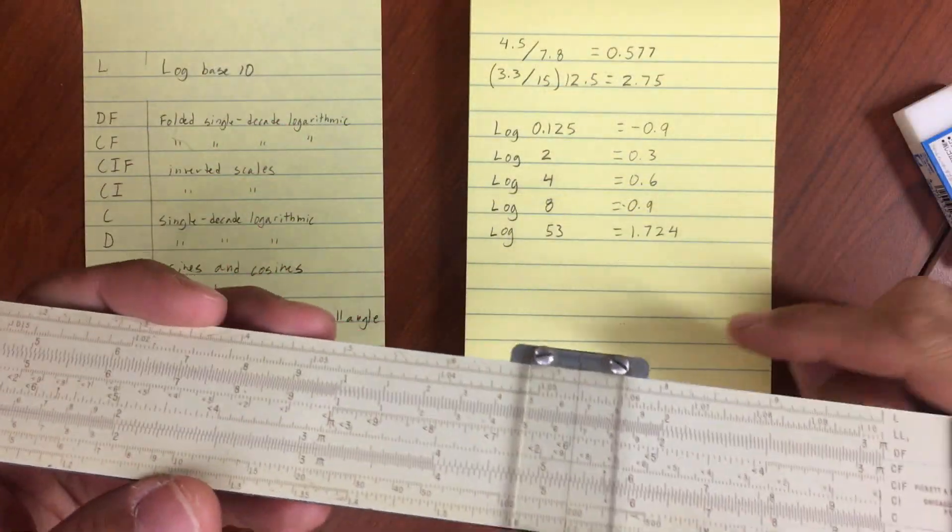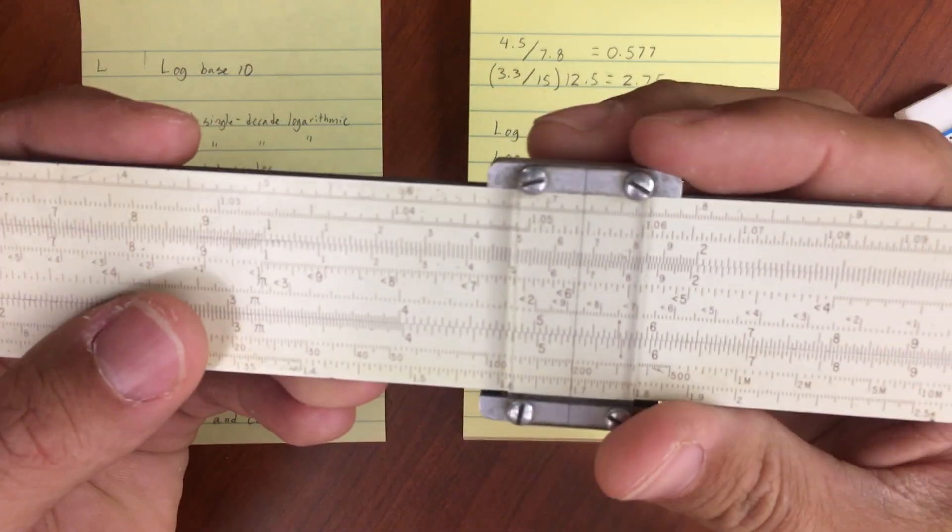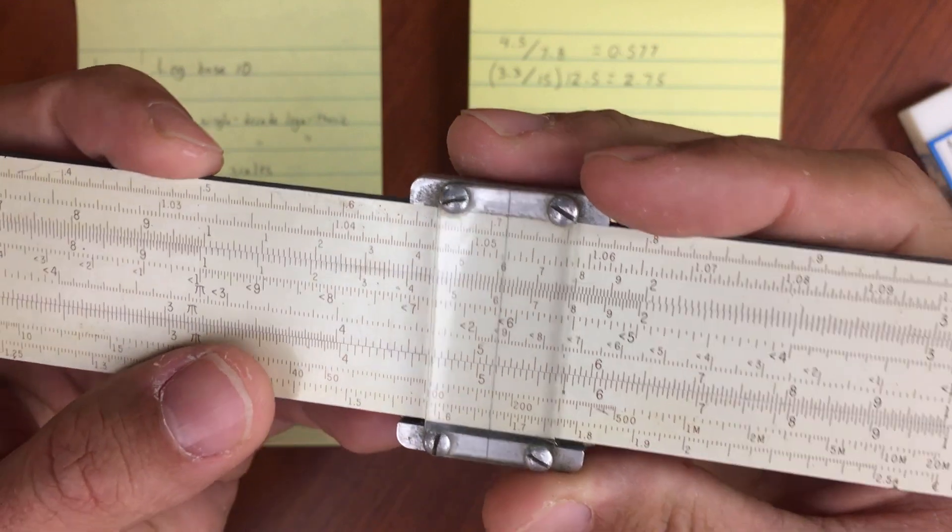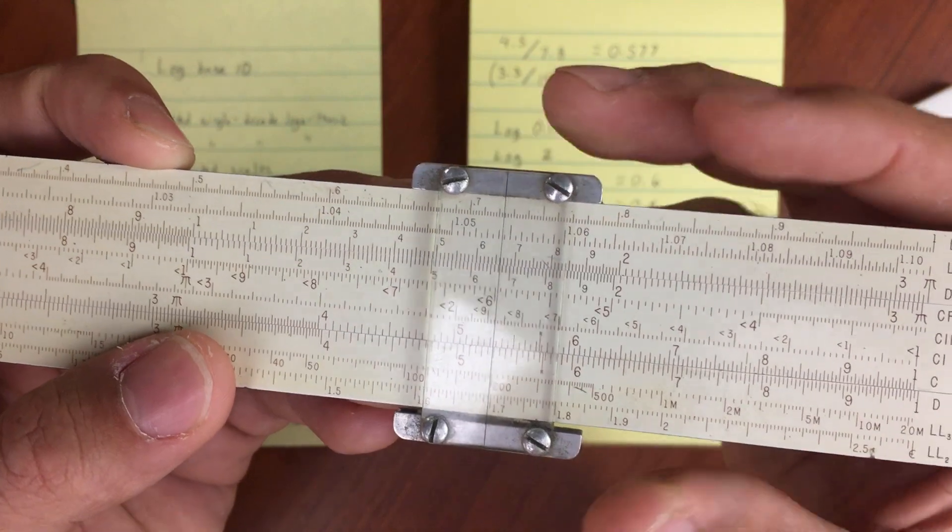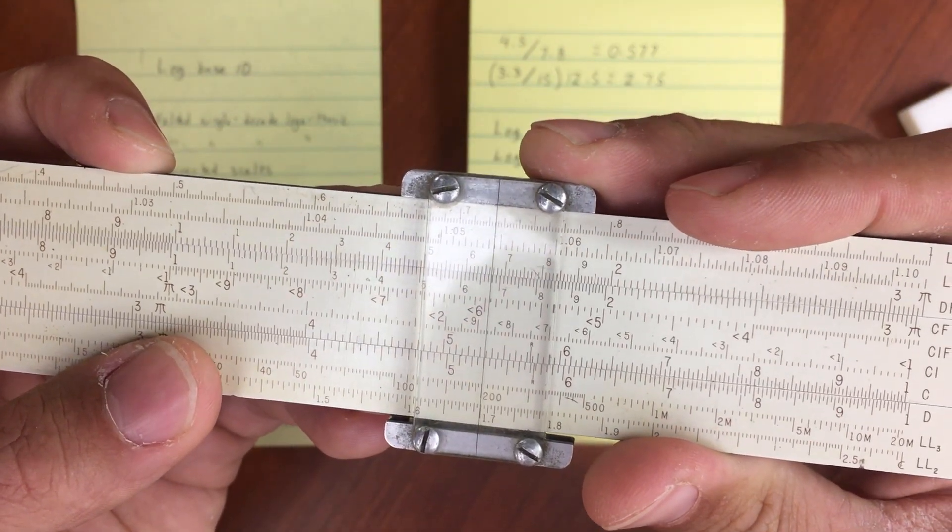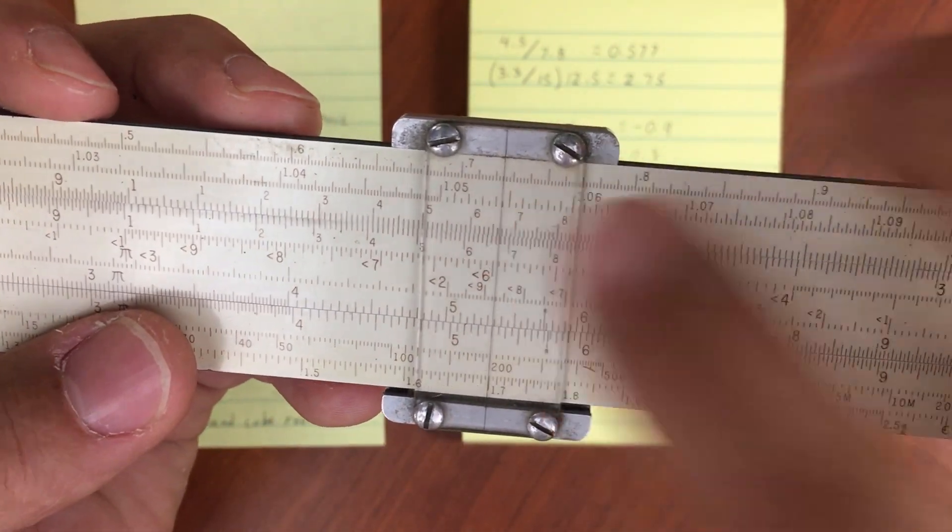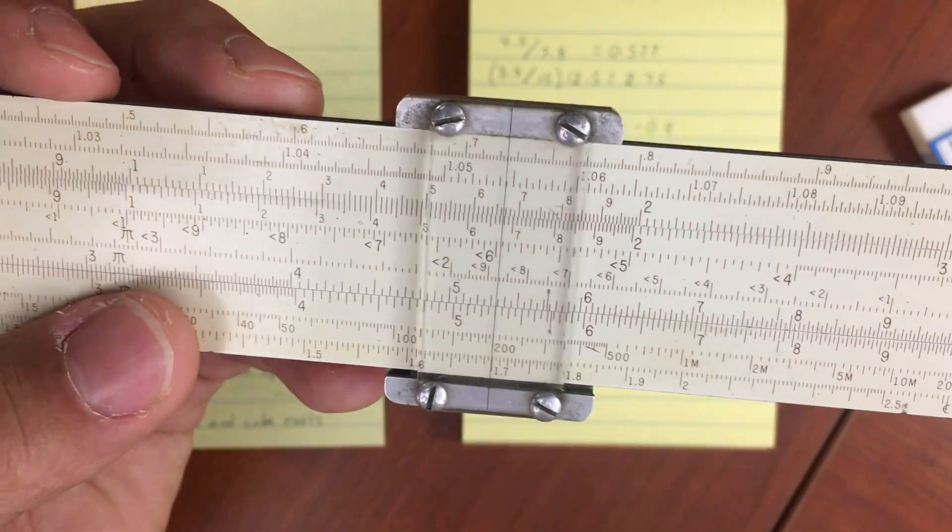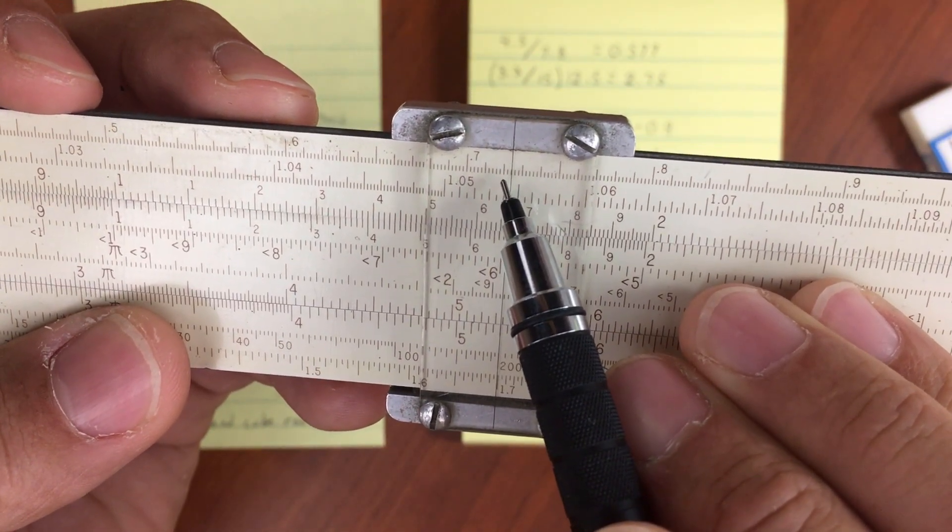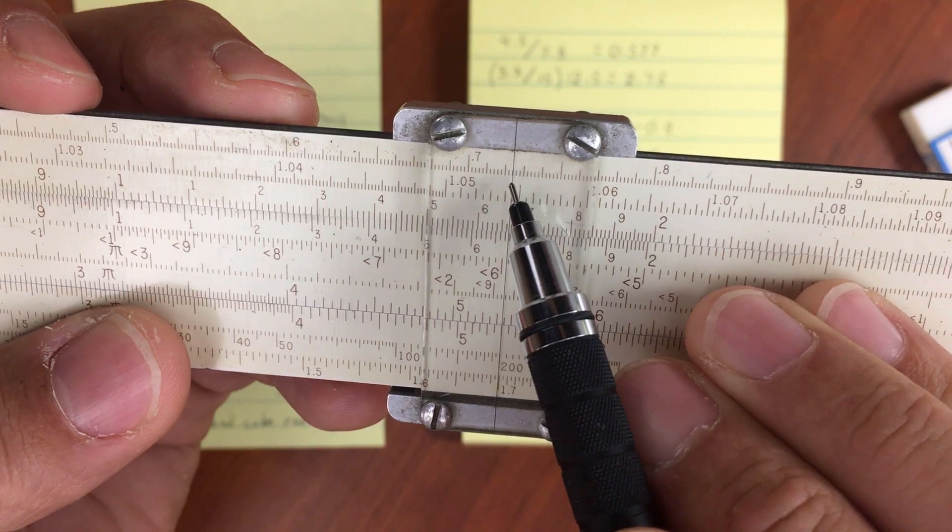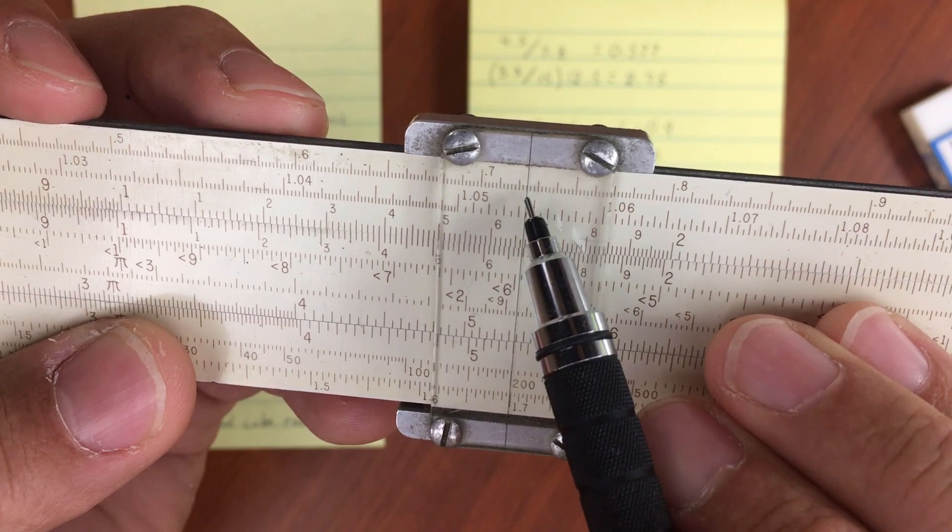And then one of our last examples here, we've got log of 53. If I move my cursor to 5.3, then read off of my L scale at the very top, I get point 724.